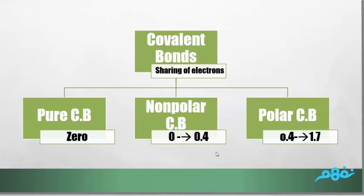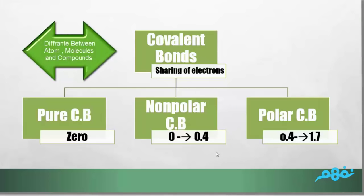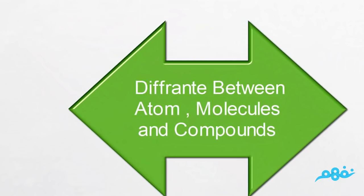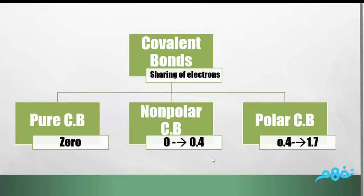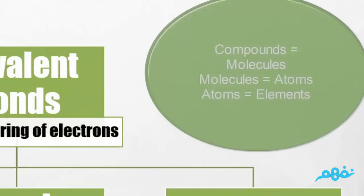Covalent bonds consist of three main types: pure covalent bond, non-polar covalent bond, and polar covalent bond. Before we study today's lesson, I'm going to discuss the difference between compounds, molecules, and atoms, because the three types of bonds are very important to study chemistry in general.